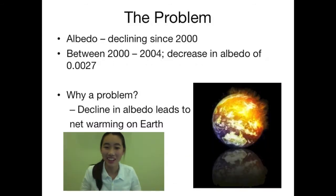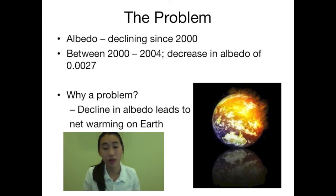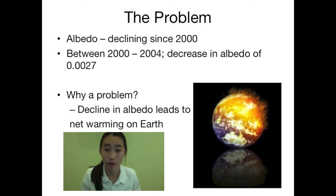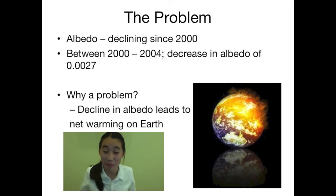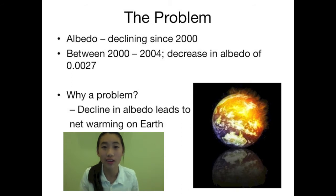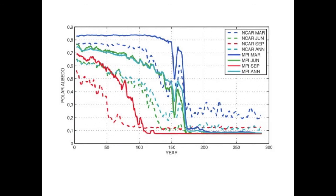What's the problem? Albedo has been steadily declining since 2000. Between 2000 and 2004, a decrease in albedo of 2.0027 has been measured. The decline in albedo leads to net warming on Earth. Here's a graph to prove it — you can see that over these years, albedo has sharply declined.